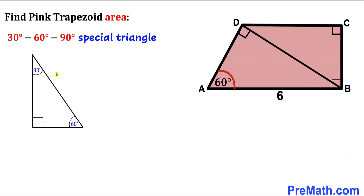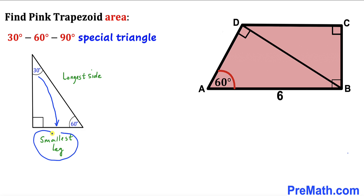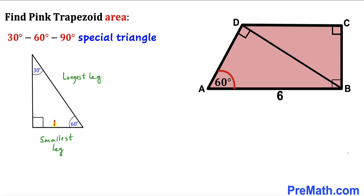Let's focus on the special 30-60-90 triangle. The 30 degrees is our smallest angle and 90 degrees is our largest angle. The side opposite the smallest angle is the smallest leg, and the side opposite the largest angle is the longest leg — also called the hypotenuse. In a 30-60-90 triangle, if the smallest leg is x units, the longest leg is 2x and the third leg is x√3.